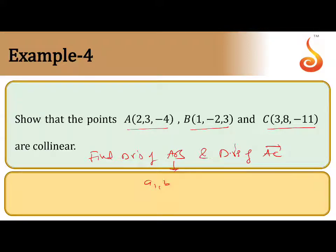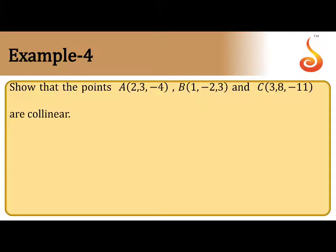Let us take DRs of AB as A1, B1, C1. Here you can take A2, B2, C2. So you have to prove that A1 by A2 equals B1 by B2 equals C1 by C2. To prove they are collinear, you have to calculate these values. Now let us start solving.